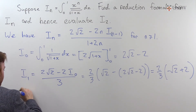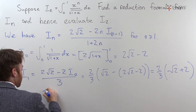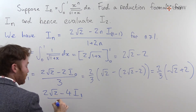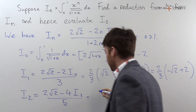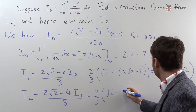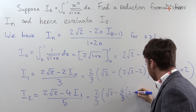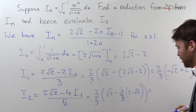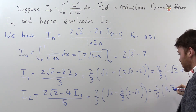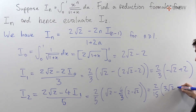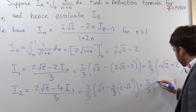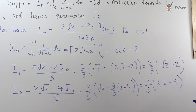And finally, I2. According to our reduction formula, I2 equals 2 root 2 minus 4 times I1, divided by 5. Writing that as 2 fifths times root 2 minus 4 thirds times (2 minus root 2), which we can simplify as 2 fifteenths times (3 root 2 minus 8 plus 4 root 2), giving 2 fifteenths times (7 root 2 minus 8). That is I2.